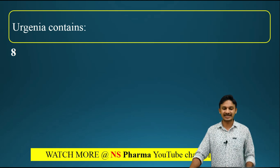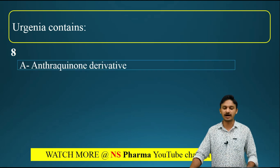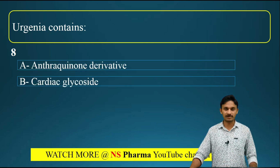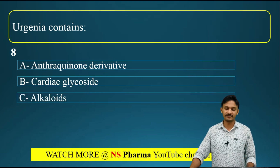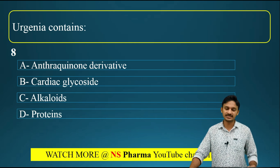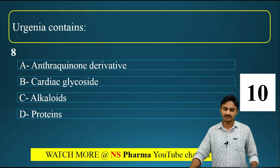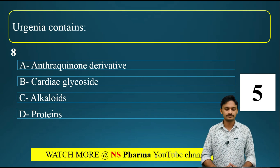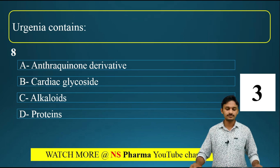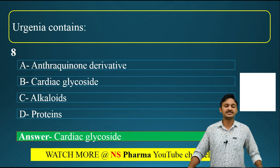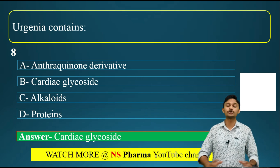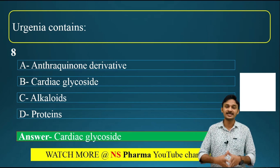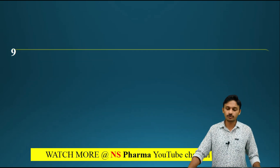Question number eight: Armeria maritima, which we studied in pharmacognosy, contains? Options are: option A - anthraquinone derivatives, option B - cardiac glycoside, option C - alkaloids, option D - proteins. The correct answer is cardiac glycoside. Armeria maritima contains cardiac glycoside. The common name for Armeria is squill.